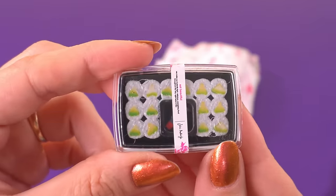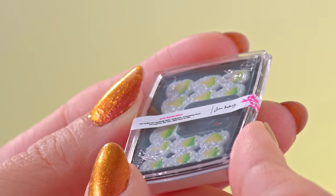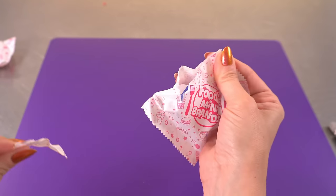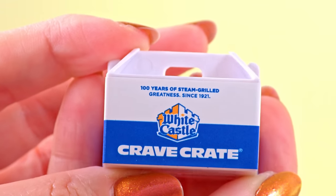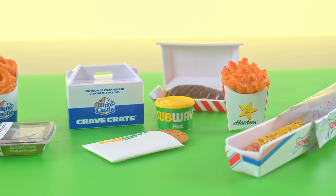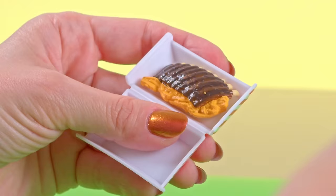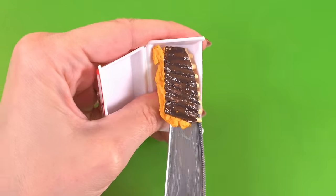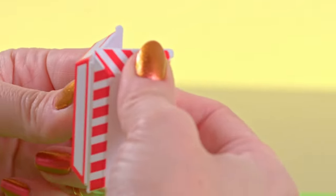Mini sushi. Look at all the writing on the back. I can't even read that. What is this? This is a crave crate. I'm not familiar with the crave crate. Now I pick my favorite. I choose the ribs from Fridays. First things first, let's get this meal out of the box. There it goes. This one is so cute. I love it so much.